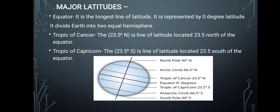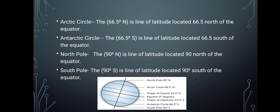The northern part is the Northern Hemisphere and the southern part is the Southern Hemisphere. The second important line is the Tropic of Cancer, found in the northern hemisphere at 23.5 degrees north. The third is the Tropic of Capricorn, similar to the Tropic of Cancer but in the southern hemisphere at 23.5 degrees south. The next important line is the Arctic Circle, found in the northern hemisphere at 66.5 degrees north. The Antarctic Circle is found at 66.5 degrees south.